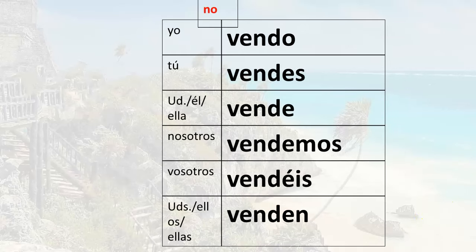If you want to negate the verb, remember all you have to do is place the no, which means not, between the verb and the subject pronoun. So yo vendo means I sell; yo no vendo means I don't sell, I do not sell. Tú vendes means you sell; tú no vendes means you don't sell.